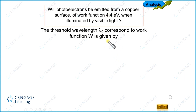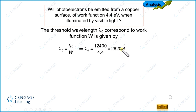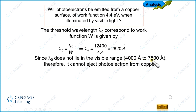The work function is given as 4.4 electron volt. Using the formula lambda₀ = HC/W = 12400/4.4, after calculation we get the threshold wavelength equal to 2820 angstroms. This means if incident radiation has a wavelength greater than 2820 angstroms, photoelectric emission is not possible. The visible range is 4000 to 7500 angstroms, which is greater than the threshold wavelength. Therefore, we cannot eject photoelectrons from the copper surface using visible light.